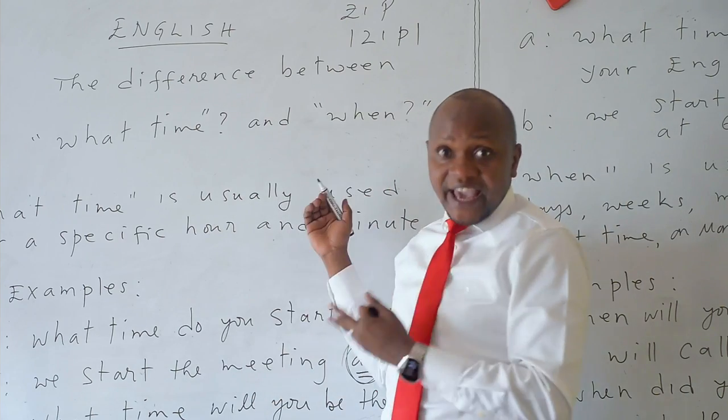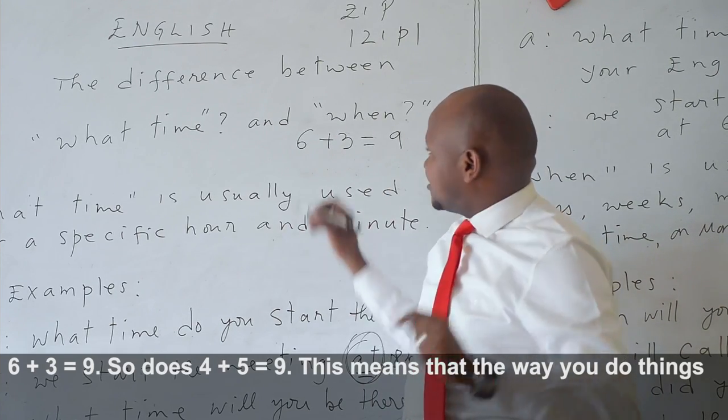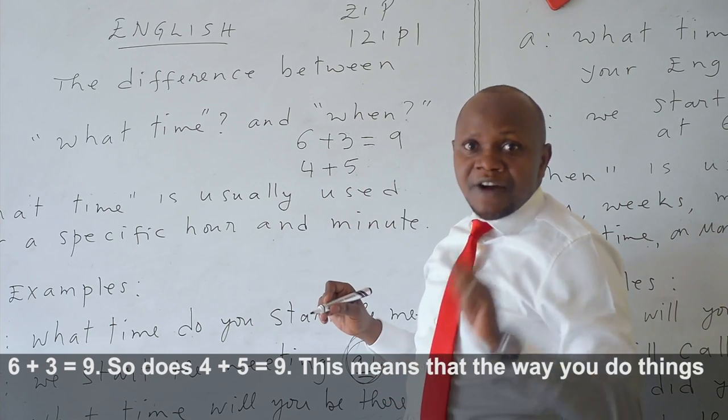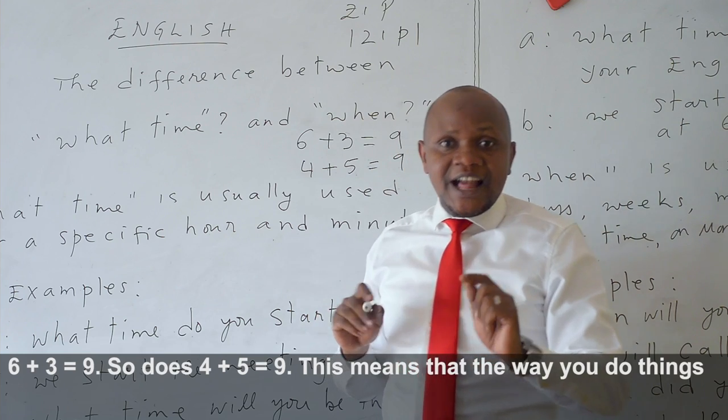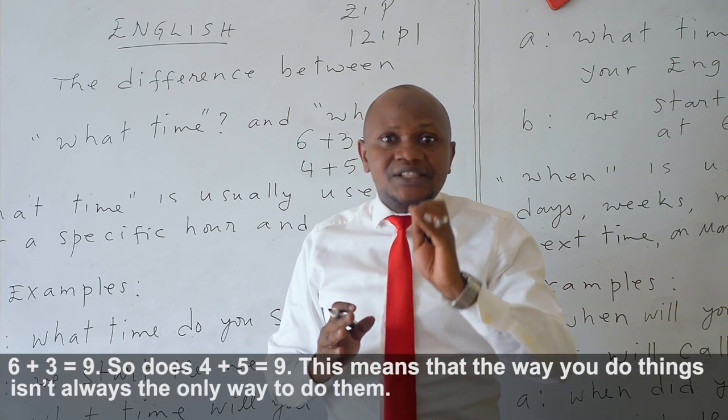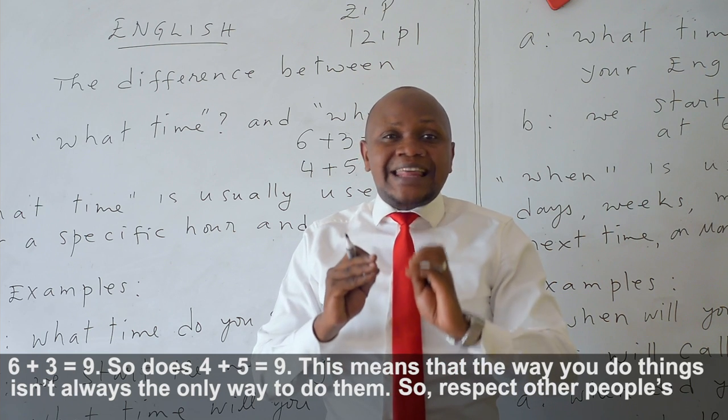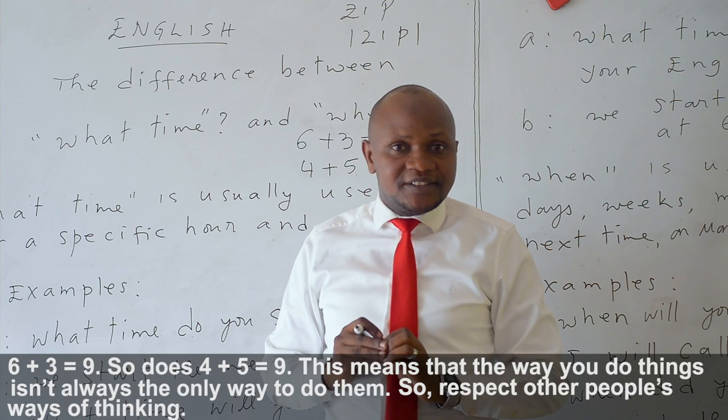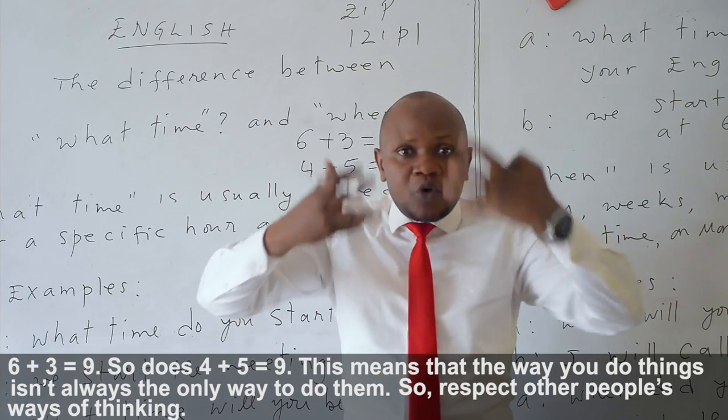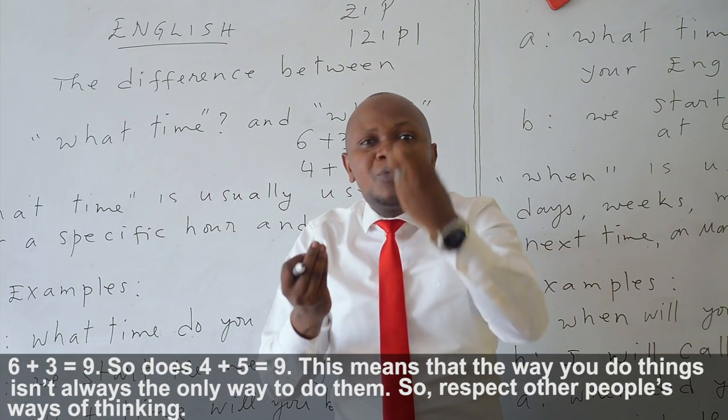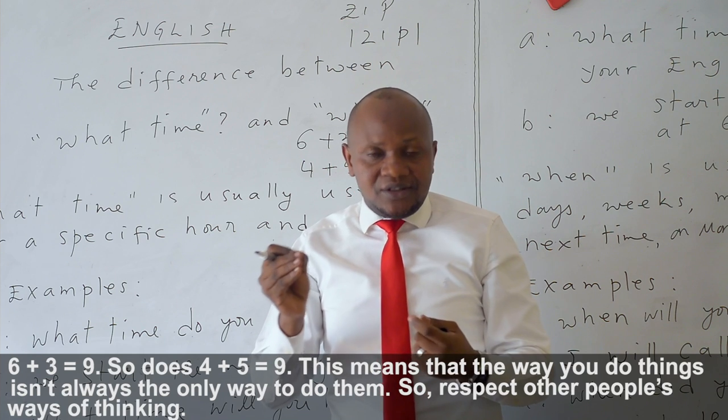Here, in English we say, 6 plus 3 equals to 9. So does 4 plus 5. 4 plus 5 equals to 9 too. This means that the way you do things isn't always the only way to do them. So, respect other people's ways of thinking.